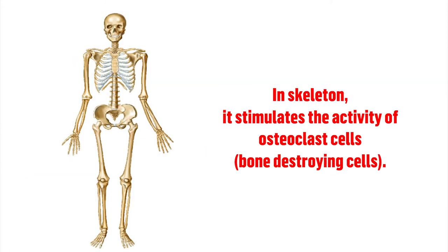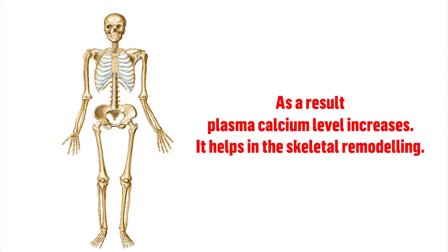In the skeleton, parathormone stimulates the activity of osteoclast cells, i.e., bone destroying cells. As a result, plasma calcium level increases. It helps in skeletal remodeling.